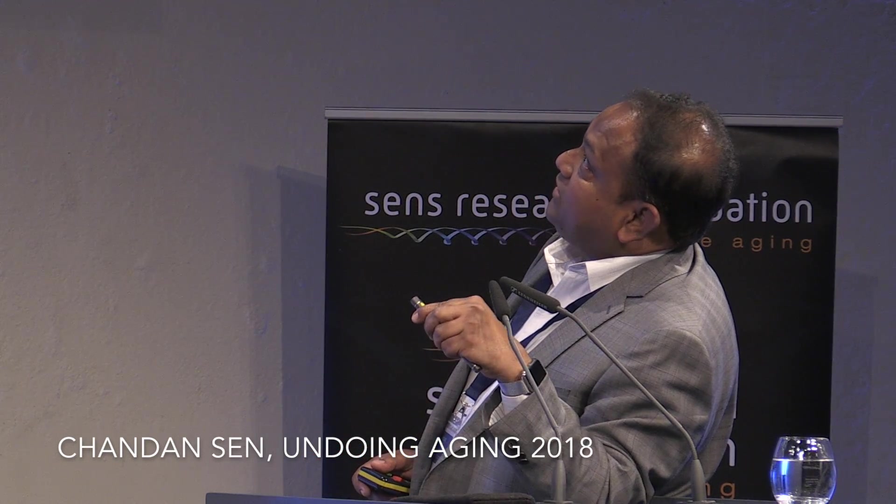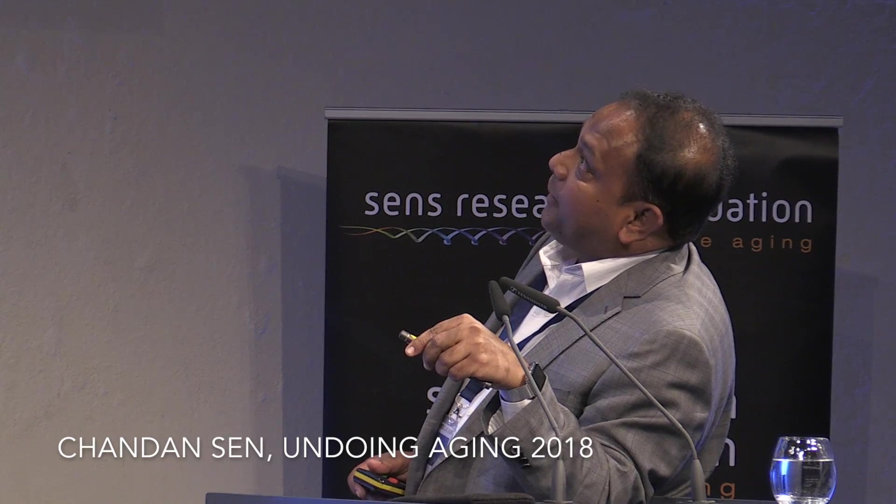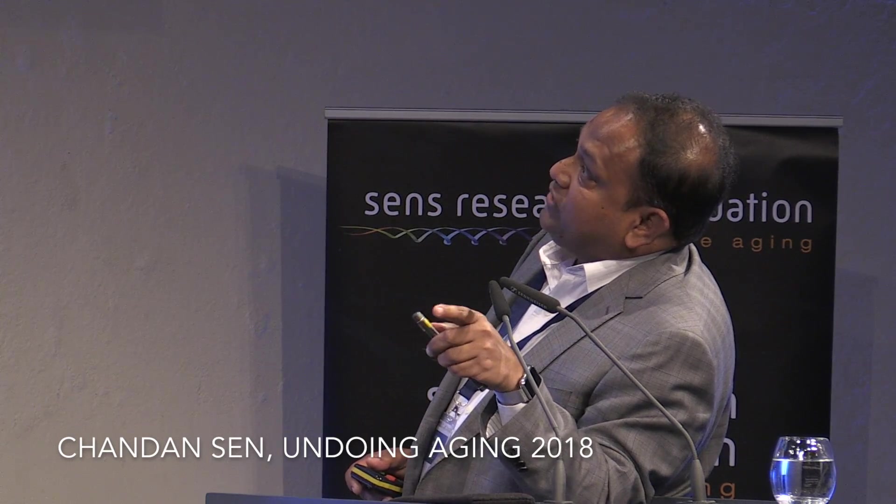We have also used this to shrink tumors — not yet published. Most recently, we identified a cocktail that turns skin into beta cells. Hundreds of beta cells home to the hair follicle niche and provide insulin to diabetic animals. We tested this in streptozotocin, db/db, and NOD mouse models, and we can bring back glucose control.